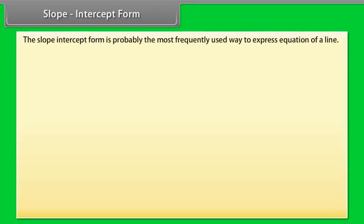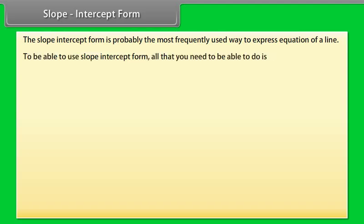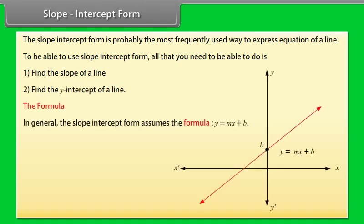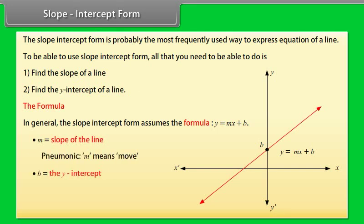Slope-intercept form is probably the most frequently used way to express the equation of a line. To use slope-intercept form, all you need is to find the slope of a line and find the y-intercept of a line. In general, the slope-intercept form assumes the formula y = mx + b, where m is the slope of the line and b is the y-intercept.